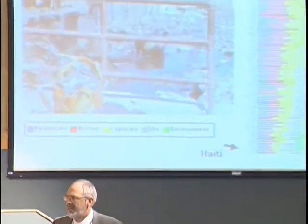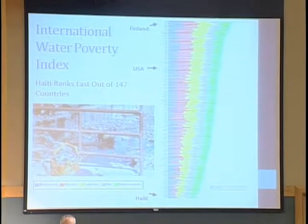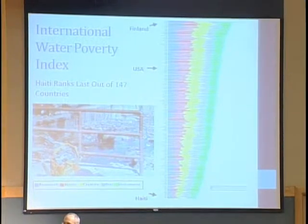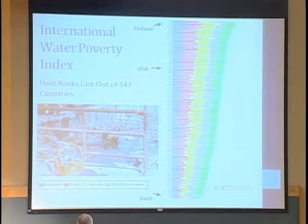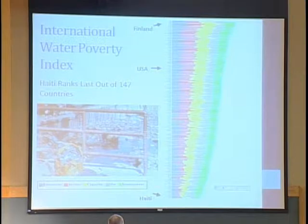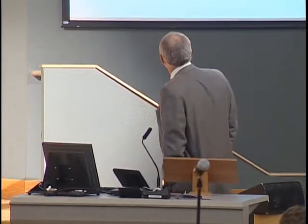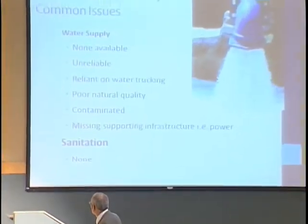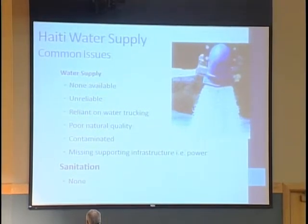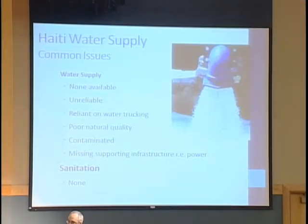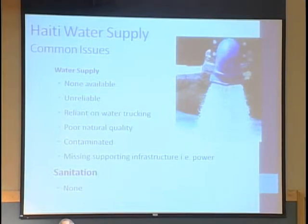Haiti is considered the most water-poor nation in the world. That is not because it's lacking water — it's lacking access to water, and more specifically, access to clean water. Haiti would actually fall somewhere in a reasonable range for water availability over time, but because of management issues and poor control, Haiti is by far the most water-poor nation. The issues are that water is sometimes not available, but more commonly it's unreliable, of poor quality, and lacking the supporting infrastructure for delivery and retention.